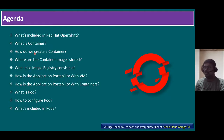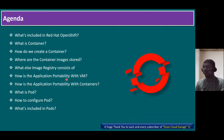Here is the agenda: what is included in Red Hat OpenShift, what is a container, how do we create a container, where are the container images stored, what else image registry consists of, how is the application portability with VM, how is the application portability with containers, what is a pod, how to configure a pod, and what is included in pods.